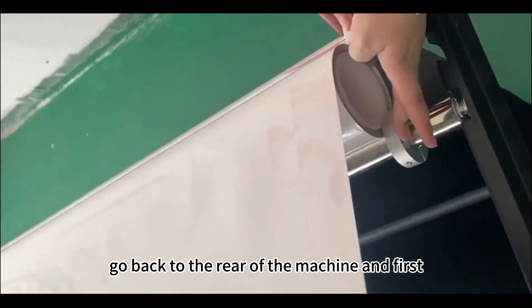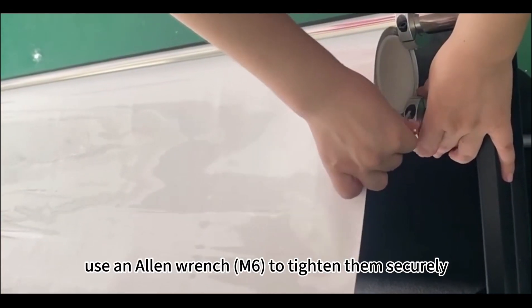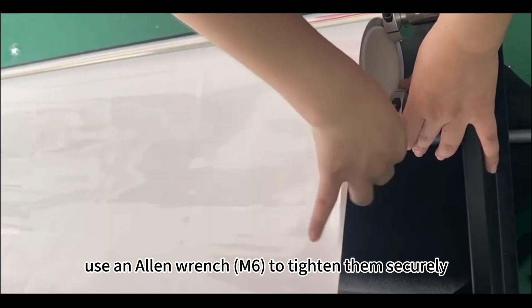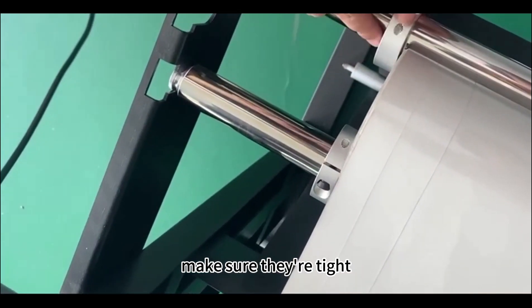Go back to the rear of the machine and first flatten the film. There are two film stops on the rod. Use an Allen wrench, M6, to tighten them securely. The two film stops on the left should be 1 mm away from the film cylinder. Make sure they're tight.